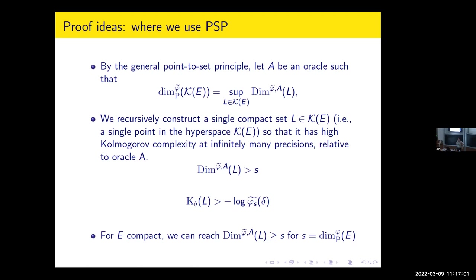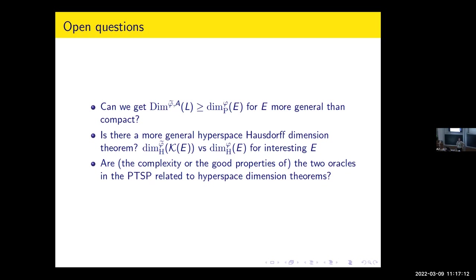Let me finish with some open questions and a summary. The final message is: the point-to-set principle is a way of proving many classical dimension results, but there's another punchline — we need to understand what's going on in the point-to-set principle because it will give us back information and insights about the effective dimension.